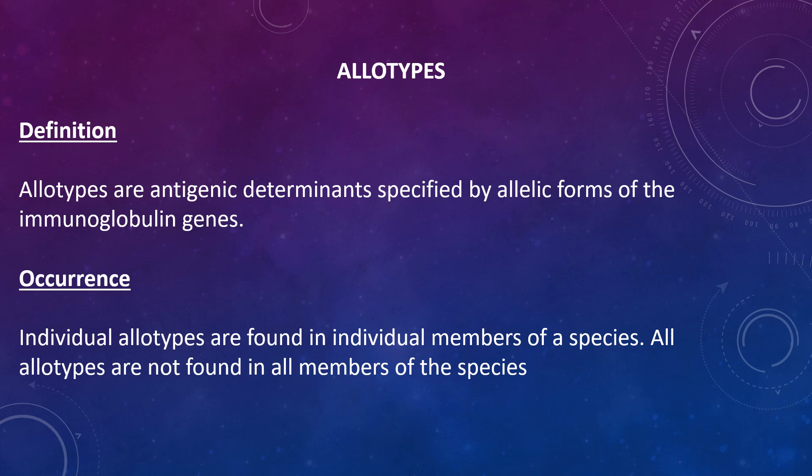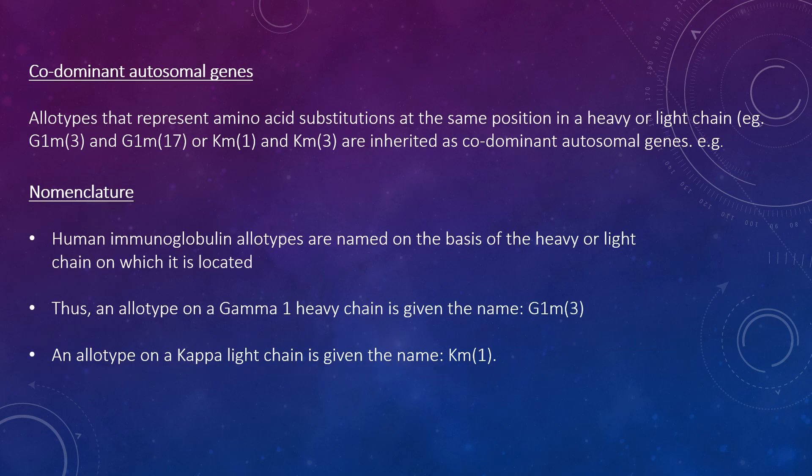Within humans, allotypic differences are localised to the constant region of the heavy and light chains. Individual allotypes are found in individual members of the species — the prefix 'allo' means difference among individuals of a species. Allotypes representing amino acid substitutions at the same position on a heavy or light chain, such as GM1, GM3, or Km3, are inherited as codominant autosomal genes. Human immunoglobulin allotypes are named on the basis of the heavy or light chain on which they are located — thus, an allotype on a gamma-1 heavy chain is named GM1, and an allotype on a kappa light chain is named Km1.